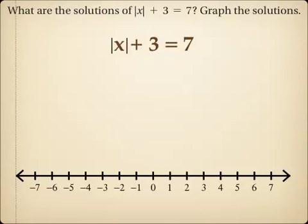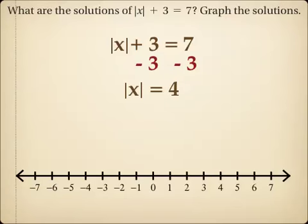Notice the only thing inside of the absolute value in this example is x. The plus 3 is on the outside of the absolute value symbol, which means the absolute value is not isolated yet. To be isolated, I need the absolute value on one side by itself, so I use inverse operations and subtract 3 from both sides. That gives me the absolute value of x equals 4.